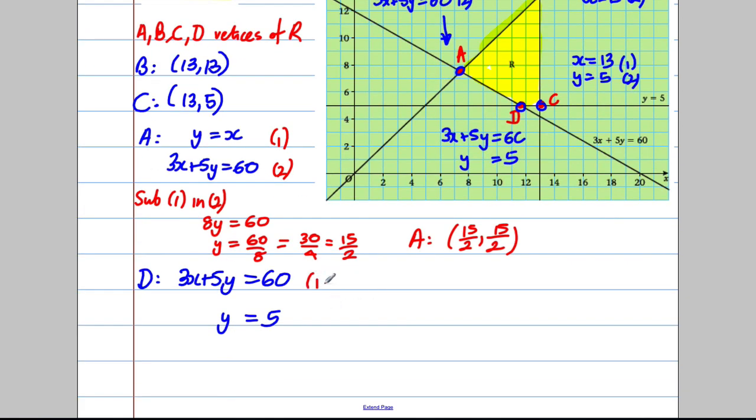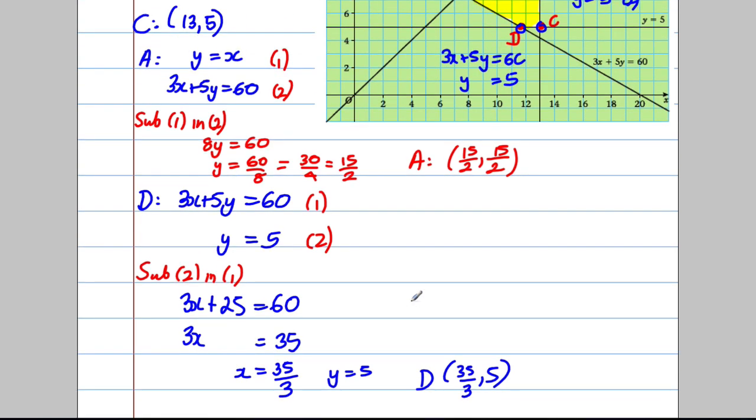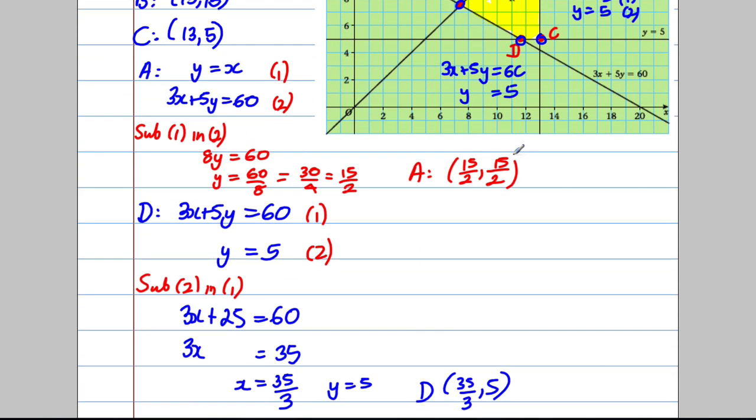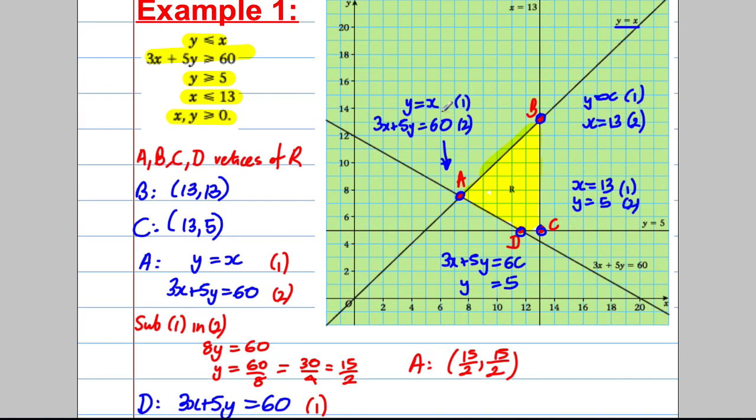And lastly, with these two ones, 1 and 2, we can put Y is 5 in here and we would say, so sub 2 in 1 and we would get ourselves that 3X plus 25 is equal to 60. So therefore, 3X must be 60. Subtract 25, which is going to be equal to 35. So X is therefore 35 over 3 and Y is equal to 5. We knew that already from here. So we would have 35 over 3 and 5 for coordinates D. Does that look right? 35 over 3. Yeah, that's just a bit, slightly more than 11 and it's with Y is 5. That's right. Okay, so that's how you do that.